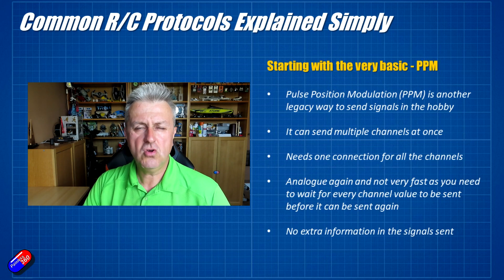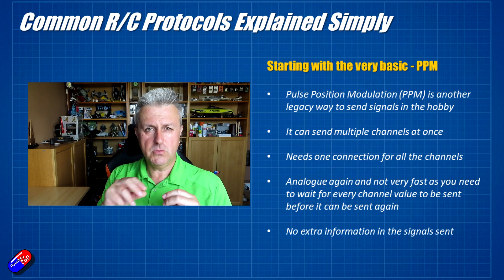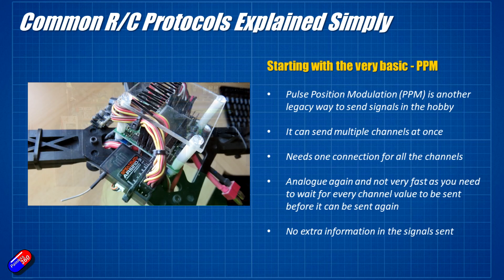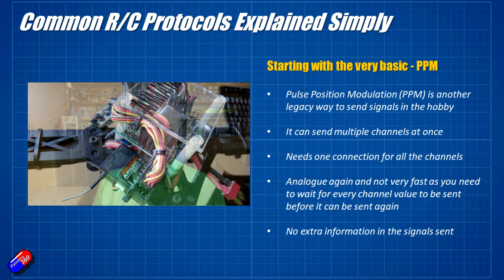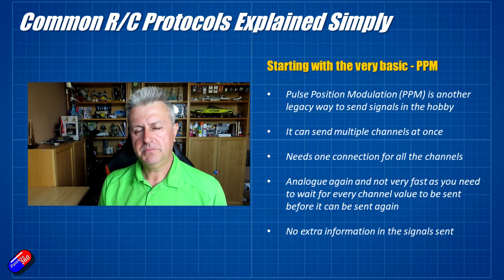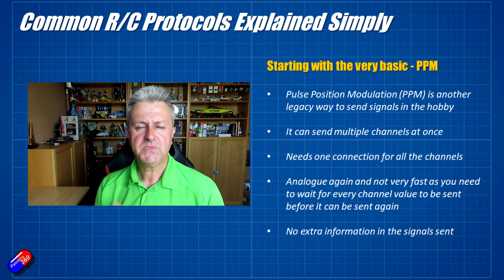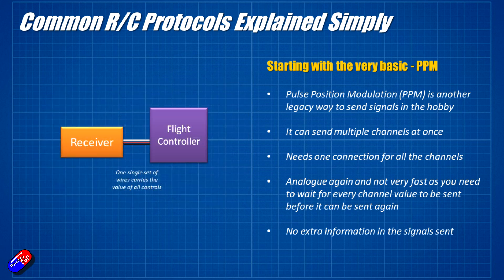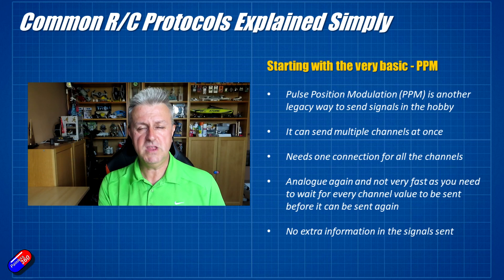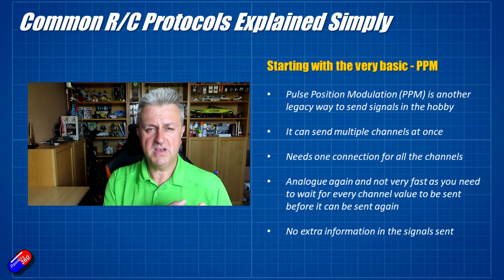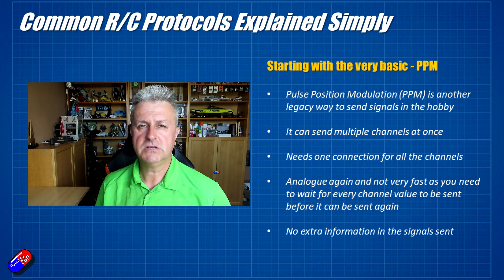When flight controllers first came along, we were doing exactly the same thing — connecting aileron, elevator, and throttle each with a three-wire cable, and it became really quite messy. You can see on this very old quadcopter how many cables there were to manage. However, the next thing that came along was PPM — Pulse Position Modulation — which is a great way to send all the signals one after the other down just one signal wire. It was a massive improvement for those with flight controllers. You plug the PPM output from the receiver into the flight controller and tell it you're using PPM.